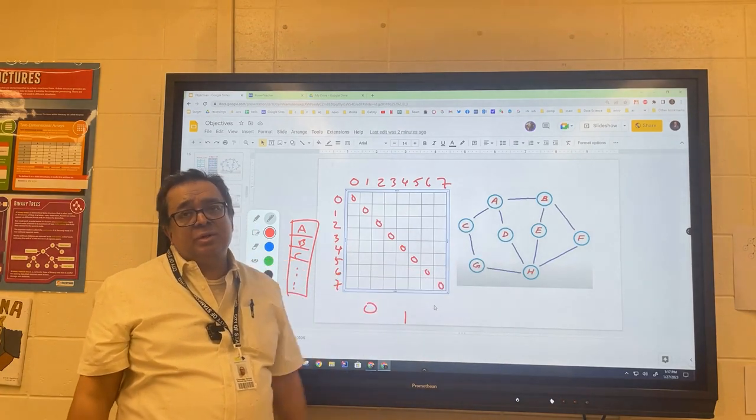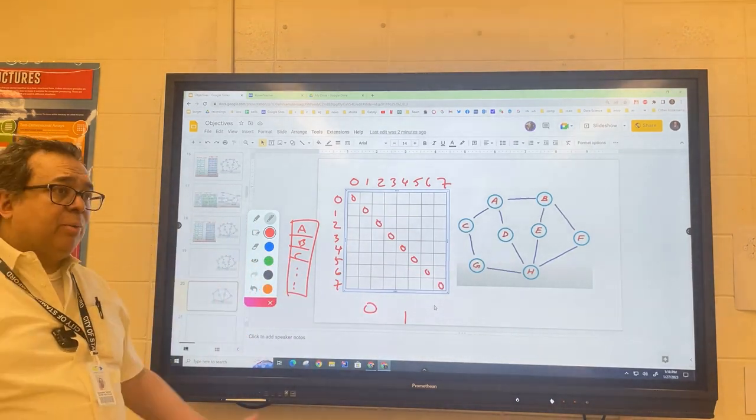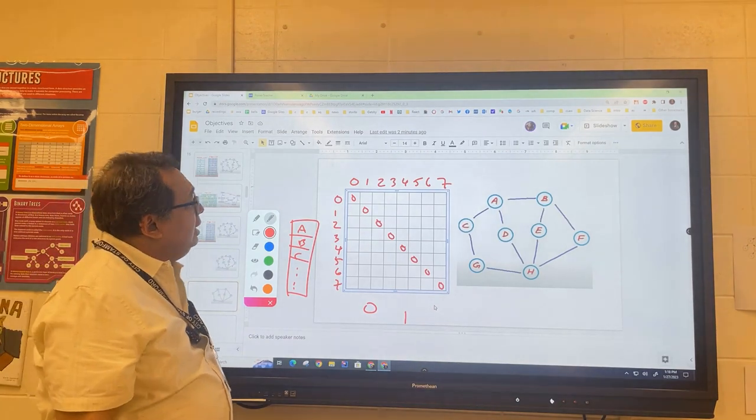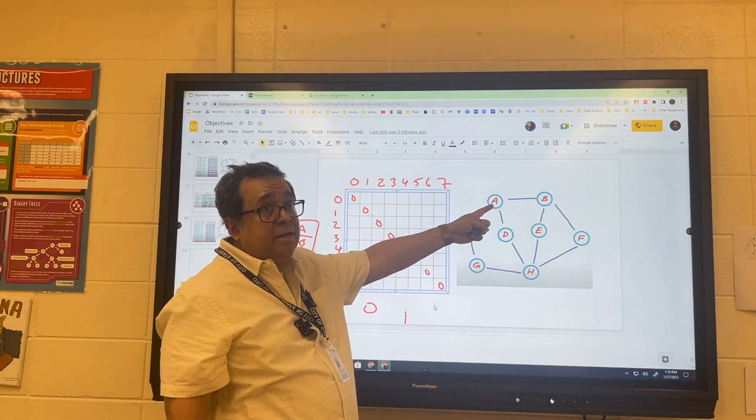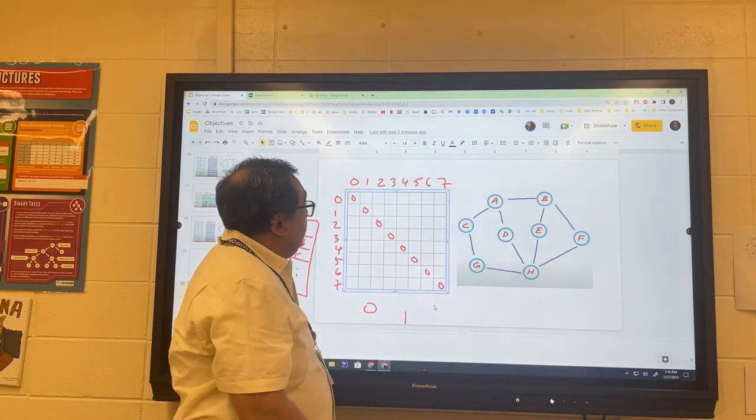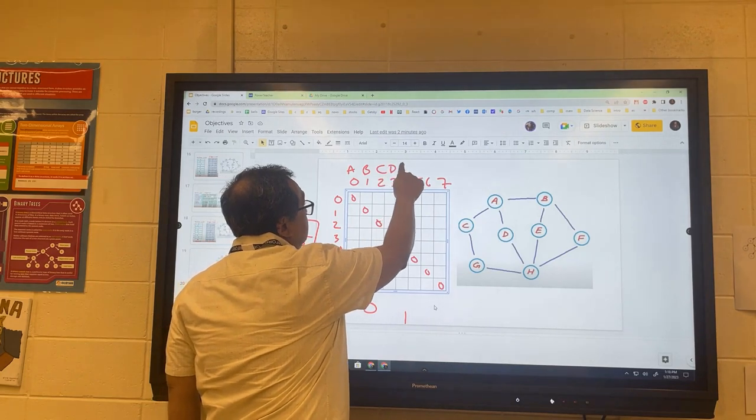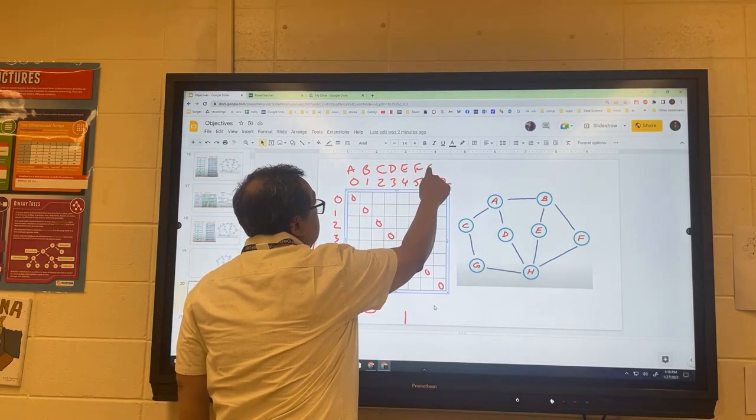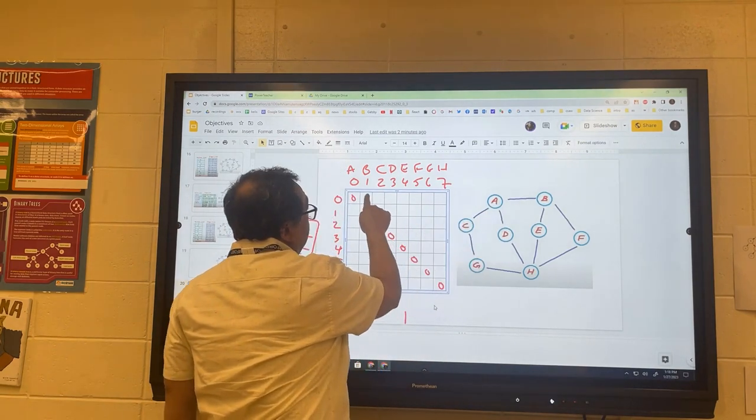My next question is what does the rest of this matrix look like? How does it describe the edges for this graph? You put a one if there's an edge. So here, A is zero and B is one, so there's an edge between A and B, so we're going to put a one here.